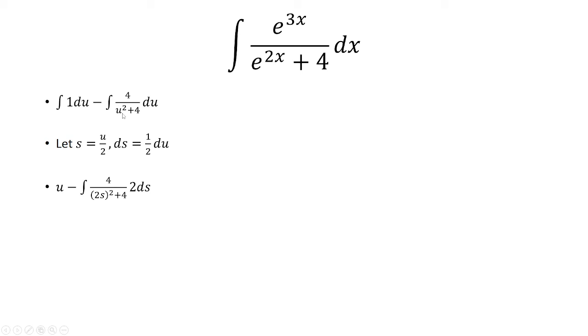Okay, so if s is equal to u over 2, that means 2s is equal to u. So that's what gets put in there. And then ds is equal to 1 half du. That means 2ds is equal to du. So that's what we have here.